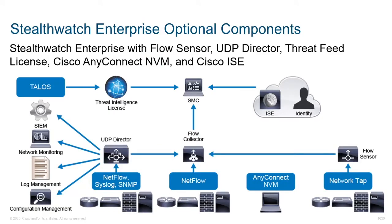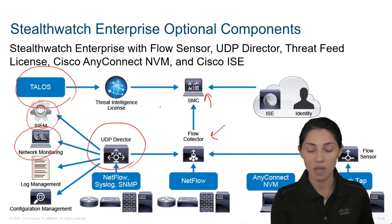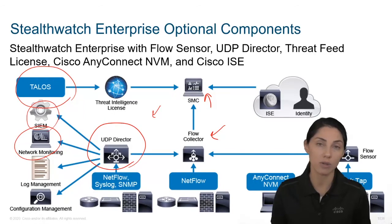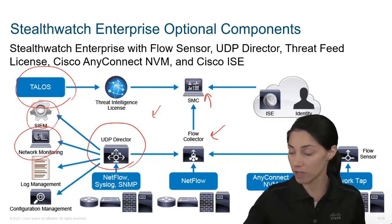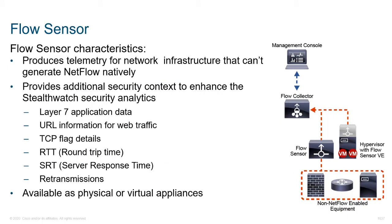We're going to look at some additional components. We don't have to have all of these, like Talos or UDP Director, but we'll look at some additional options. The UDP Director is neat because in addition to sending NetFlow data to our flow collector and to SMC, if we want to send it to a SIEM or network monitoring system, the UDP Director can take that traffic and forward it to other locations so we aren't pushing too much traffic throughout the network — aggregating it to one position and bouncing it from there.